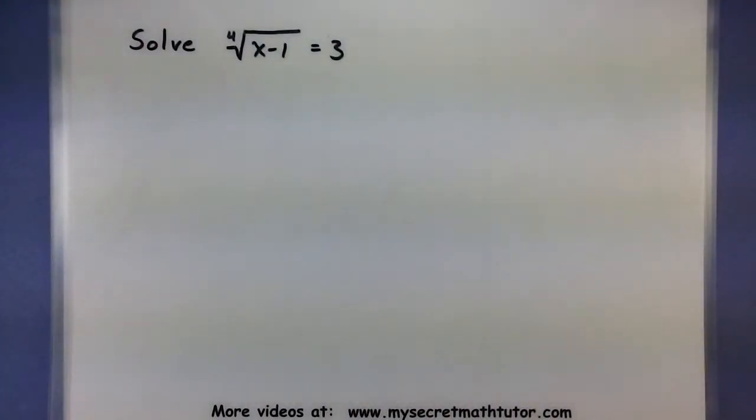So here I have a small one. The fourth root of x minus 1 is equal to 3. And I want to solve for x. So this root is already isolated on one side of the equal sign.